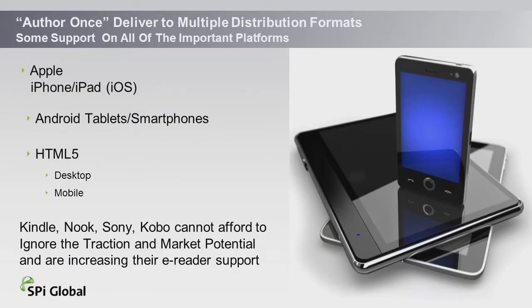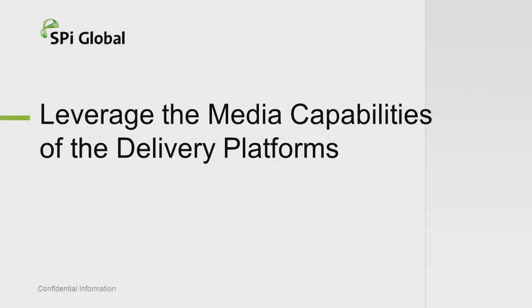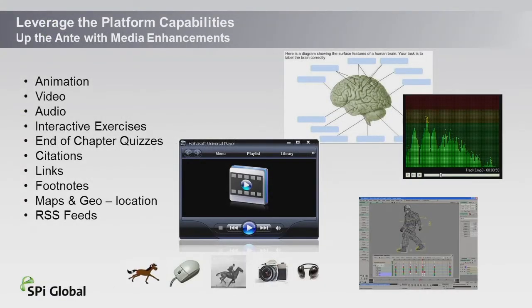One thing I really wanted to mention: the people producing devices, producing readers, and controlling the ecosystem are starting to pay attention to what's going on in EPUB3, and they're all starting to creep up on some very good support for the product. They're not there all the way yet, but they're getting there. What's the sense of having this great device if you don't leverage all of the media capabilities? EPUB3 and HTML5 allow you to do all these things that everyone wants to see.